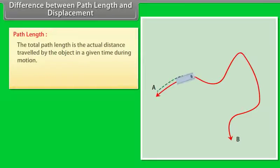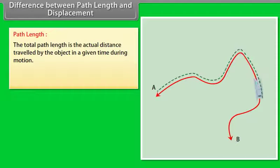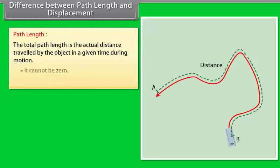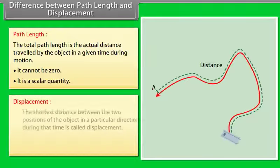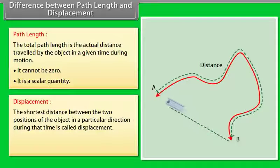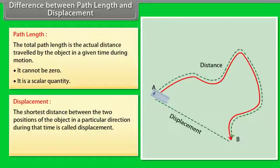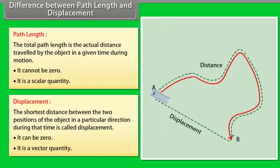Difference between path length and displacement. Path length: the total path length is the actual distance traveled by the object in a given time during motion. It cannot be zero; it is a scalar quantity. Displacement: the shortest distance between the two positions of the object in a particular direction during that time is called displacement. It can be zero; it is a vector quantity.